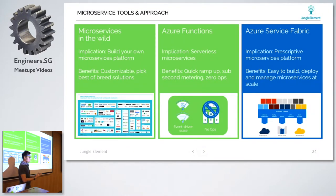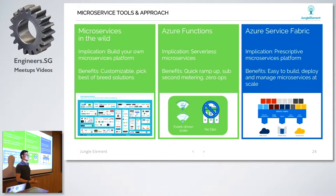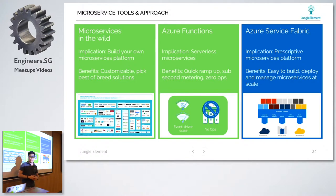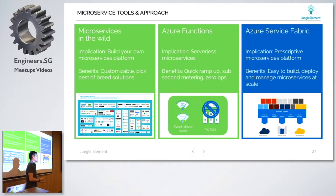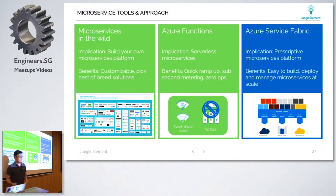We've covered microservice approach. A lot of companies are moving towards microservice tools and approach where everything is built as a service - very small scale, easy to scale. Azure Functions comes in where you can ramp up your dev operations and speed of development. And of course, you have Service Fabric, which is another layer on its own, but we won't cover that today.